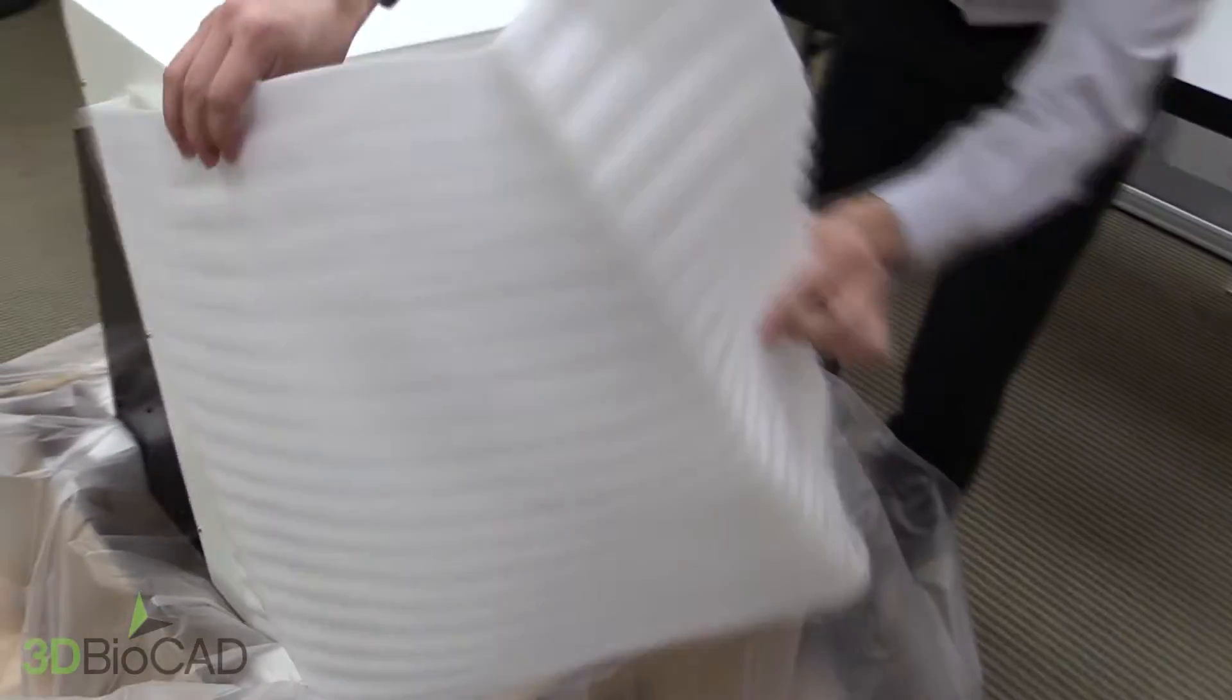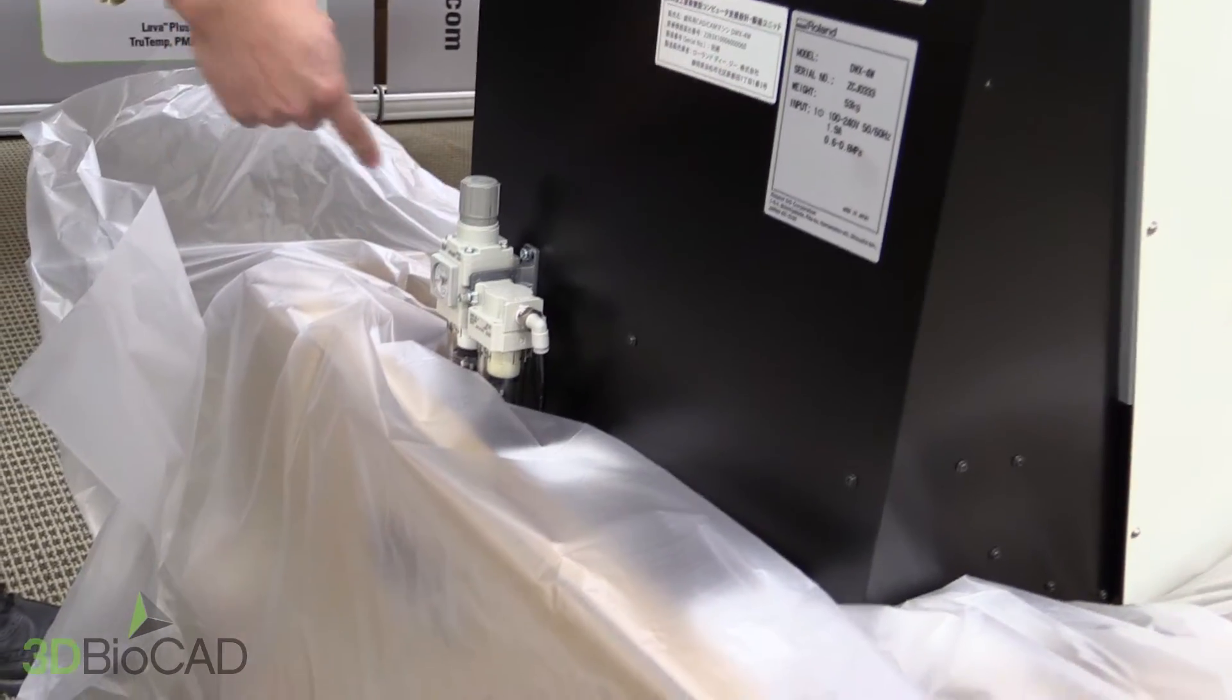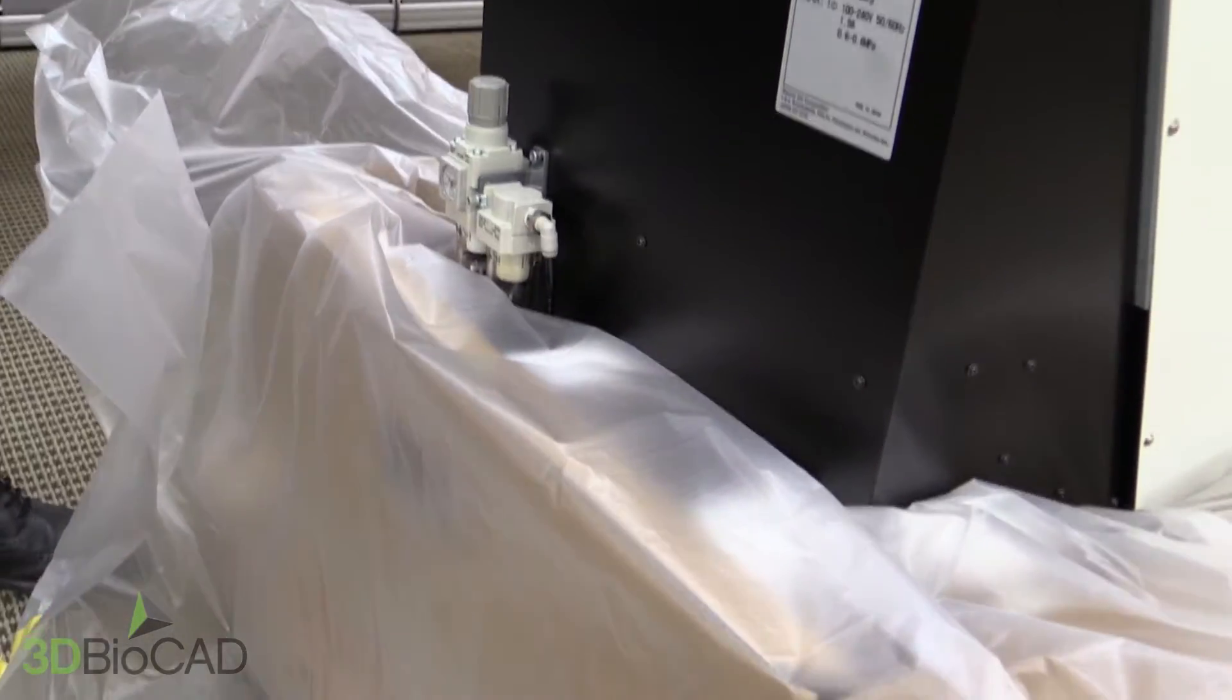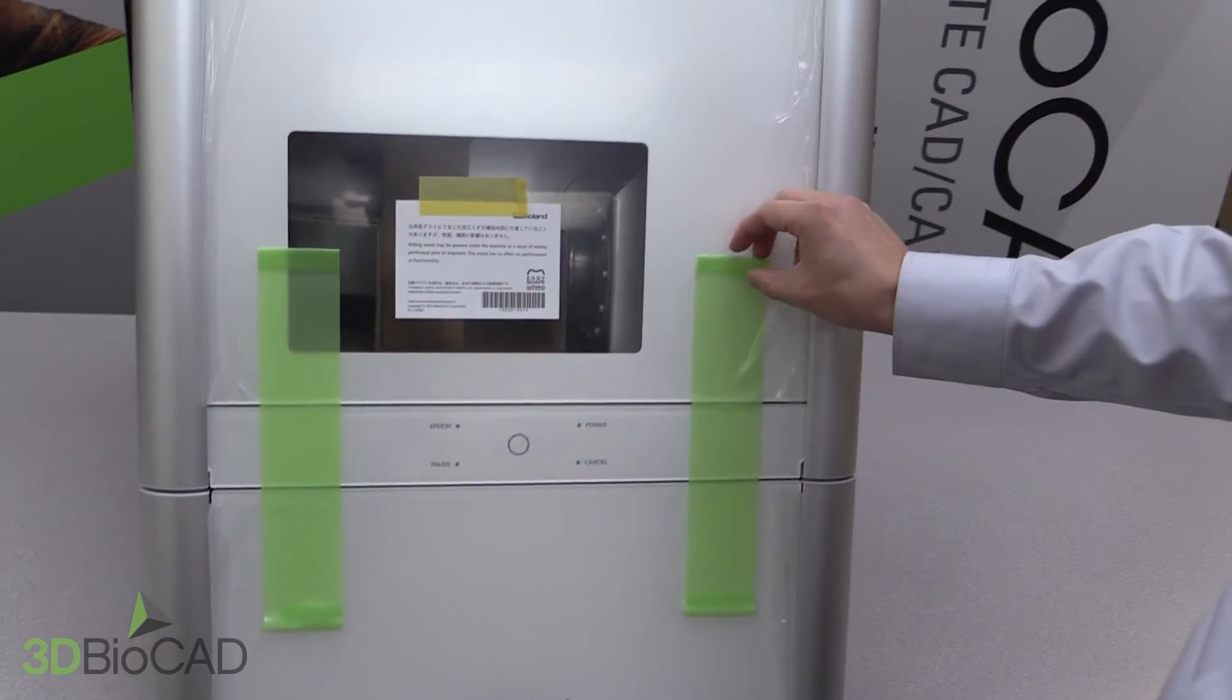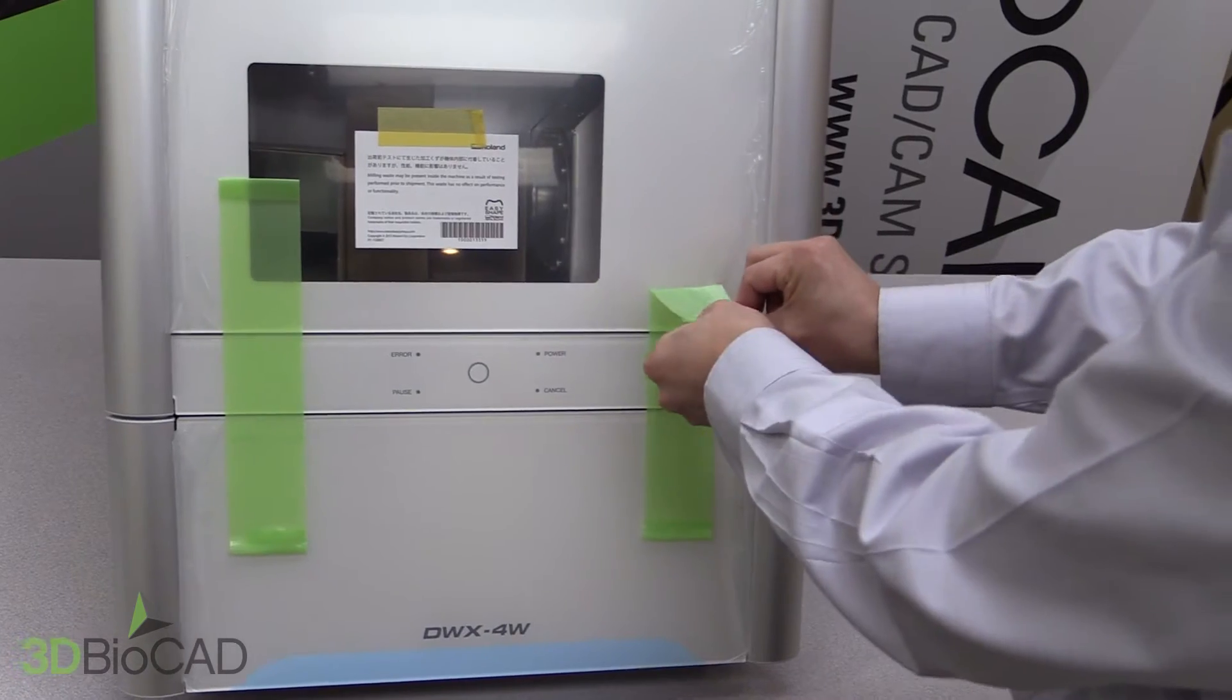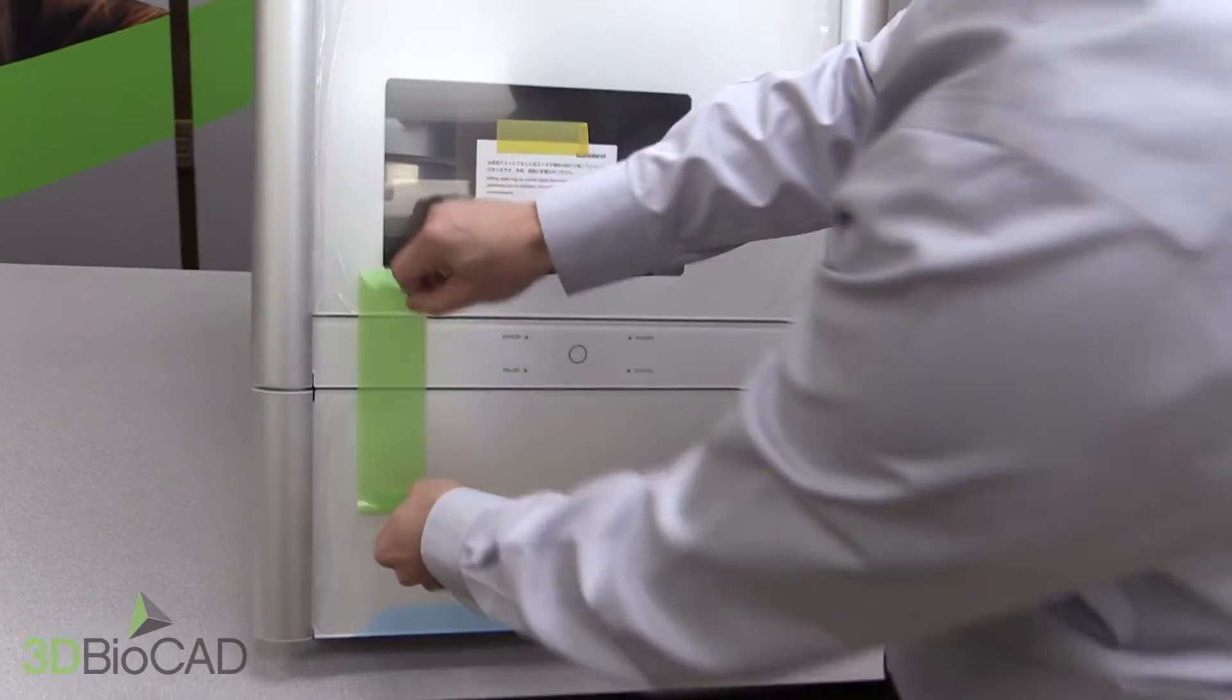Be cautious of the air regulator on the back of the machine. Remove the DWX-4W from the box and place in the designated workstation and remove the green tape securing the door.